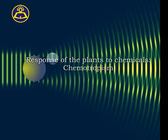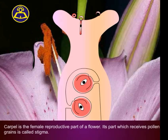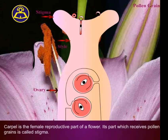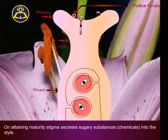Chemotropism is the response of plants to chemicals. The carpel is the female reproductive part of a flower. Its part which receives pollen grains is called the stigma.